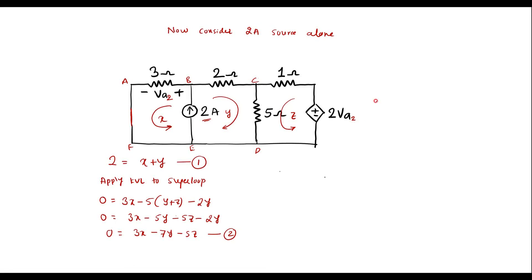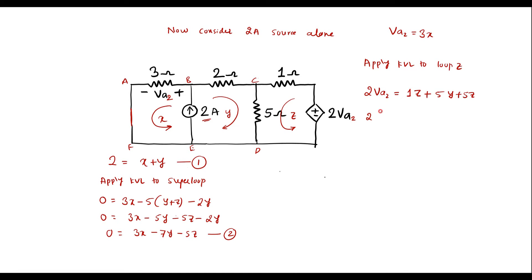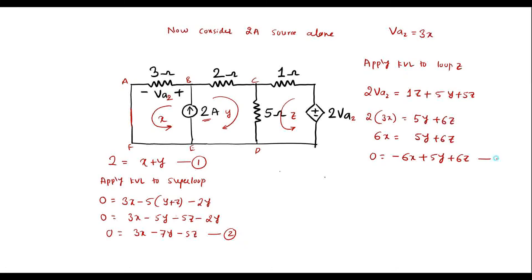Now apply KVL to loop Z: starting from the voltage source, 2VA2 equals 1 times Z plus 5Y plus 5Z, giving 5Y plus 6Z. We observe that VA2 equals 3X. Substituting: 6X equals 5Y plus 6Z, or 0 equals minus 6X plus 5Y plus 6Z. Let this be equation 3.